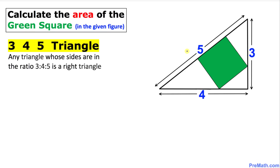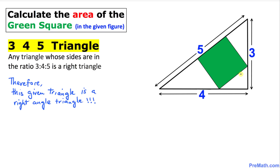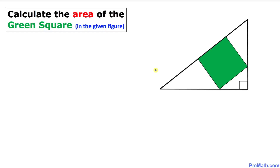As we can see, this triangle is in a ratio of 3, 4, 5. Any triangle whose sides are in the ratio of 3, 4, 5 is always a right triangle. Therefore, this given triangle is indeed a right triangle, which means this angle is 90 degrees.